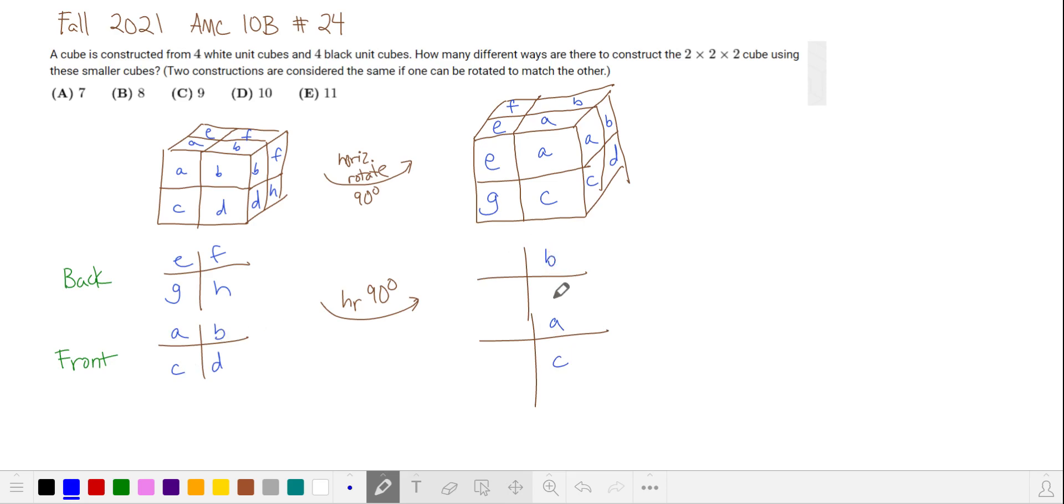A and C move over to where B and D are. B and D move to the back. F and H move over to the left. And E and G come up to the front. And it's equivalent to the cube I drew in the back, but it takes much less time to document this.